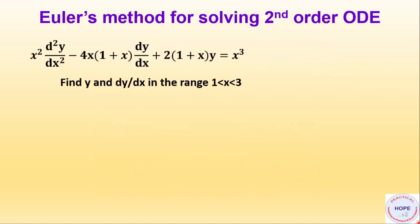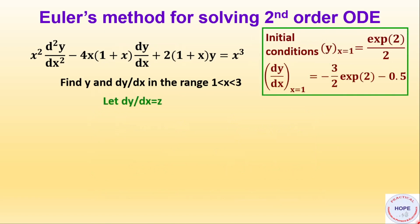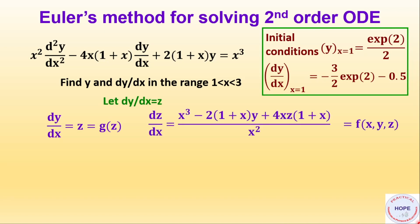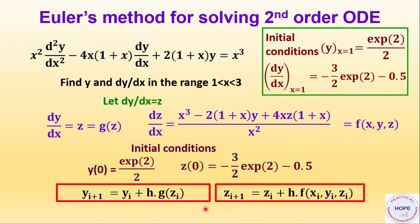Let's take an example. The given second-order ODE requires finding y and dy/dx for x in [1, 3] with given initial conditions. Setting dy/dx = z (function g) and deriving dz/dx as function f(x, y, z) by substituting dy/dx = z, we then apply Euler's method to evaluate y and z.